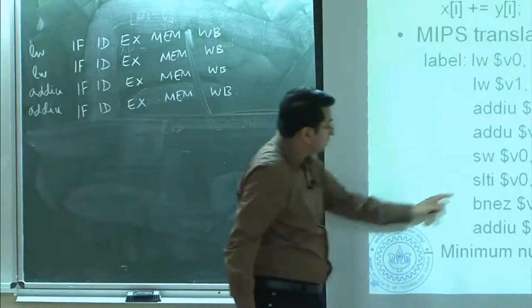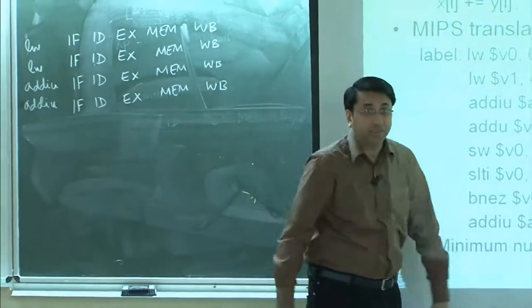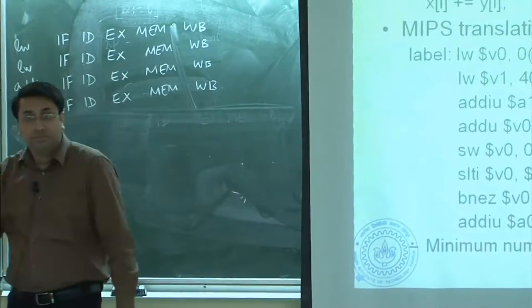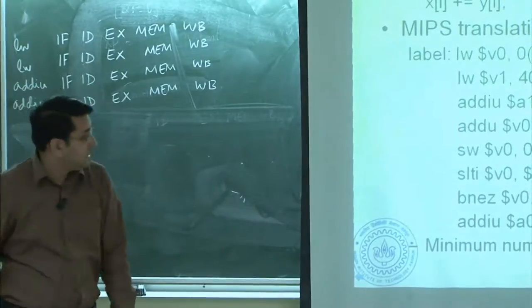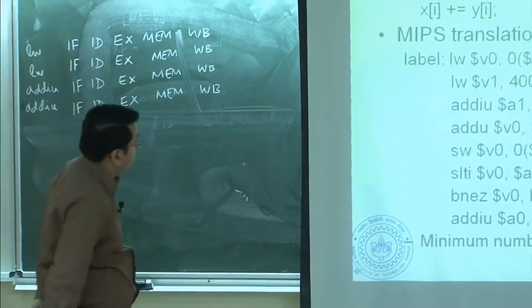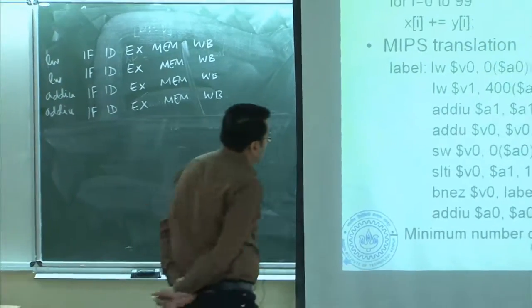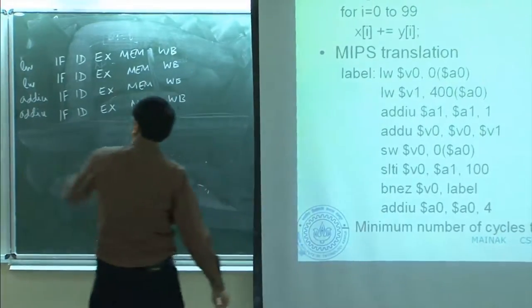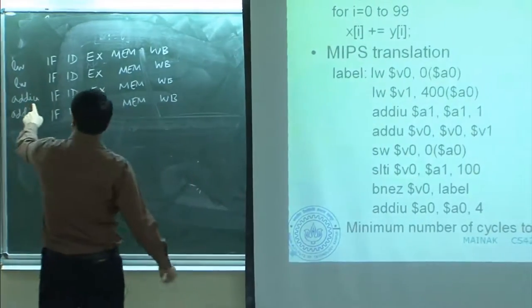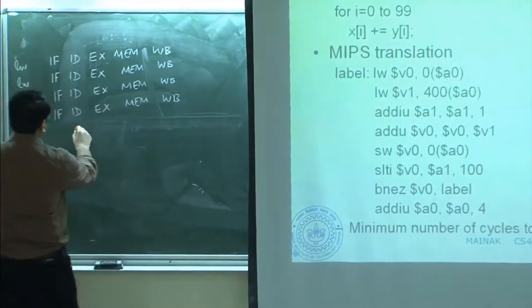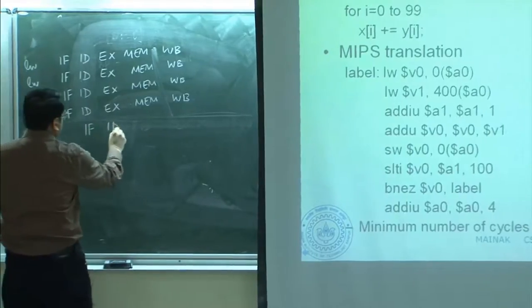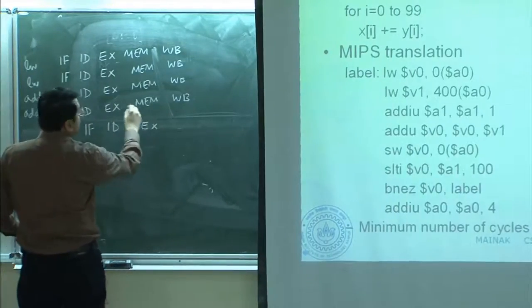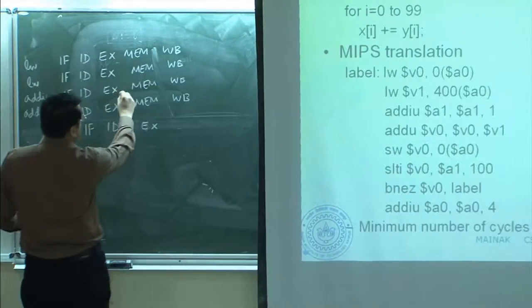Why could I not send this instruction in this cycle? This one is just comparing dollar a1 against 100, and dollar a1 is being computed here. So as such, if I fetch it here and execute it here, it will actually pick up from the bypass.